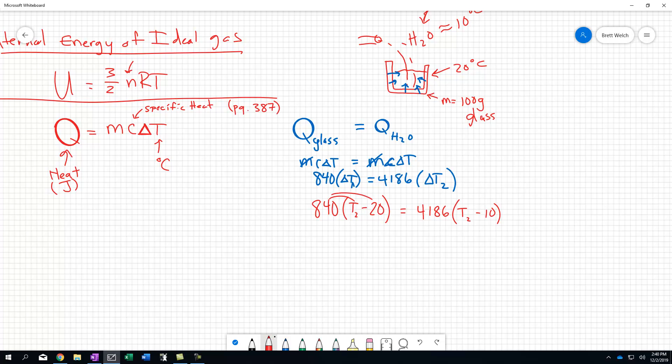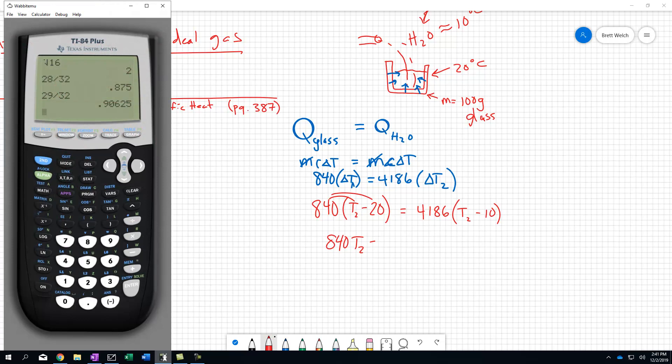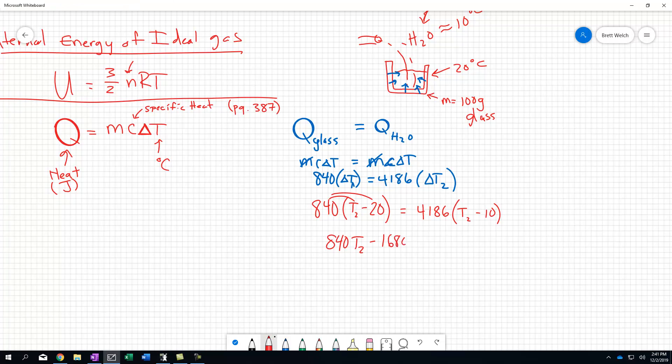What we're going to do now is we'll go ahead and distribute 840 T2 minus, and this will be off because the temperature is going to look negative, but 840 times negative 20 because that's negative 16,800. And then over here we'll get 4186 T2 minus 41860.